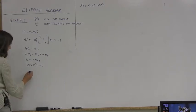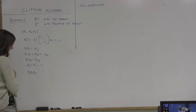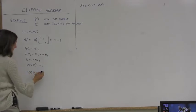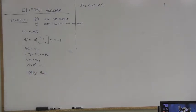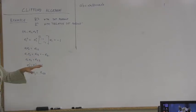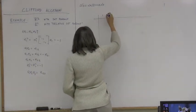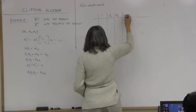We also have the volume element E1E2E3 = E123. Now we can build the full multiplication table for all elements: 1, E1, E2, E3, E12, E23, E31, E123. This becomes a large table quickly. The unit element 1 multiplied by anything gives that thing.